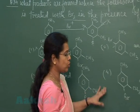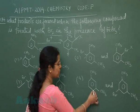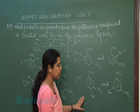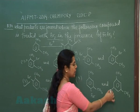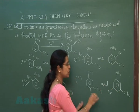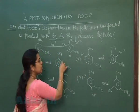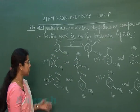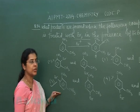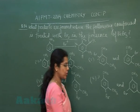In the fourth option, the first structure has bromine attacking at the para position, which is permitted, but in the second structure bromine is attacking at the meta position, which is not permitted. So the fourth option is incorrect. Option number three is the correct answer to this question.